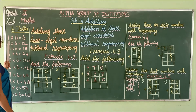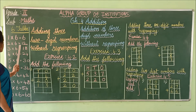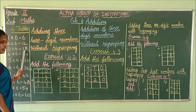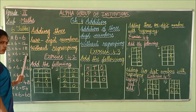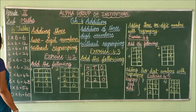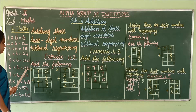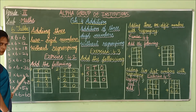See here. 1, 6 is 6. 2, 6 are 12. 3, 6 are 18. 4, 6 are 24. 5, 6 are 13. 6, 6 are 36. 7, 6 are 42.